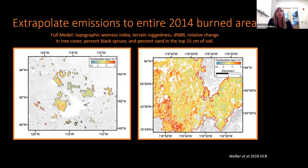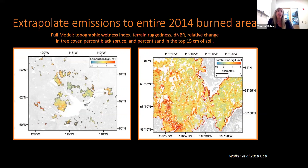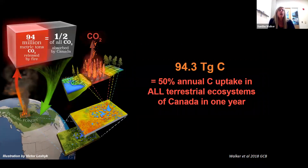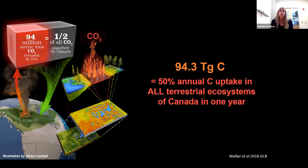We then used this spatial variation in our field-based estimates of emissions to extrapolate emissions to the entire 2014 burned area, shown on the left-hand panel, with a zoom-in on the right-hand panel. The model is capturing significant spatial variability in combustion. Because we used a relatively small spatial scale — 30 meters — we were able to capture small water bodies and unburned areas that in the past have not been captured in models of carbon emissions. Scaling those estimates to the entire 2014 burned area, we found that approximately 94 teragrams of carbon — equivalent to 50% of annual net ecosystem production or total carbon uptake in all terrestrial ecosystems of Canada in one year — was combusted.